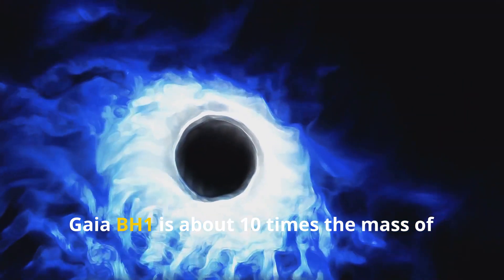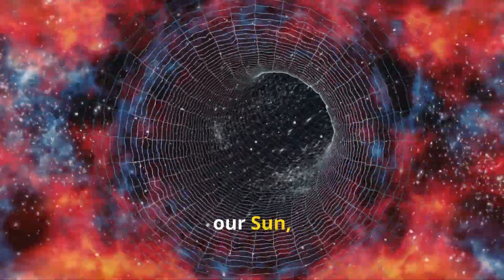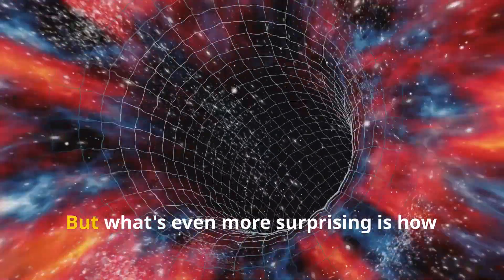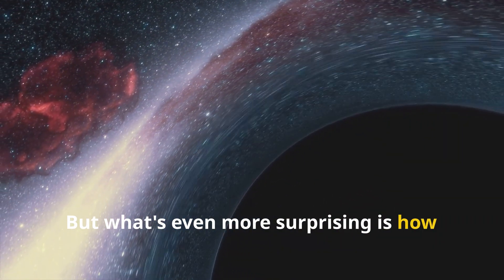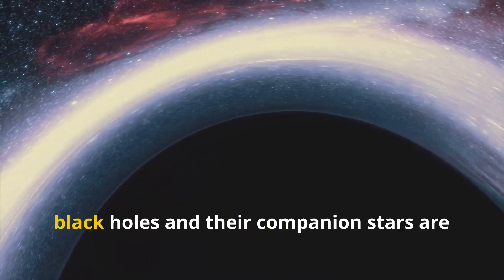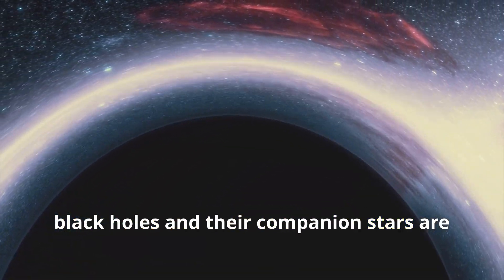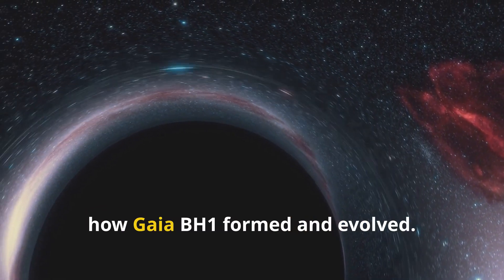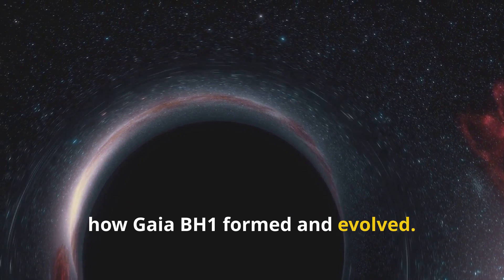Gaia BH1 is about 10 times the mass of our Sun, which is pretty big for a stellar mass black hole. But what's even more surprising is how far away its companion star is. Usually, black holes and their companion stars are much closer together. This raises interesting questions about how Gaia BH1 formed and evolved.